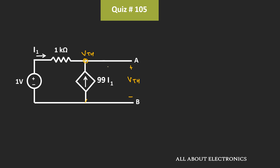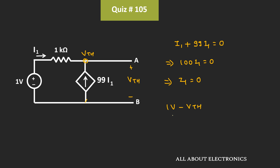If we apply the KCL equation, then we can write current I1 plus 99I1 is equal to 0, because as these two terminals are open-circuited, no current will flow in this direction. That means 100I1 is equal to 0, or I1 is equal to 0. Here, this current I1 can be given as 1V minus Vth divided by 1 kΩ. And as I1 is equal to 0, we can say that voltage Vth is equal to 1V. That means the Thevenin's equivalent voltage across terminals A and B is equal to 1V.